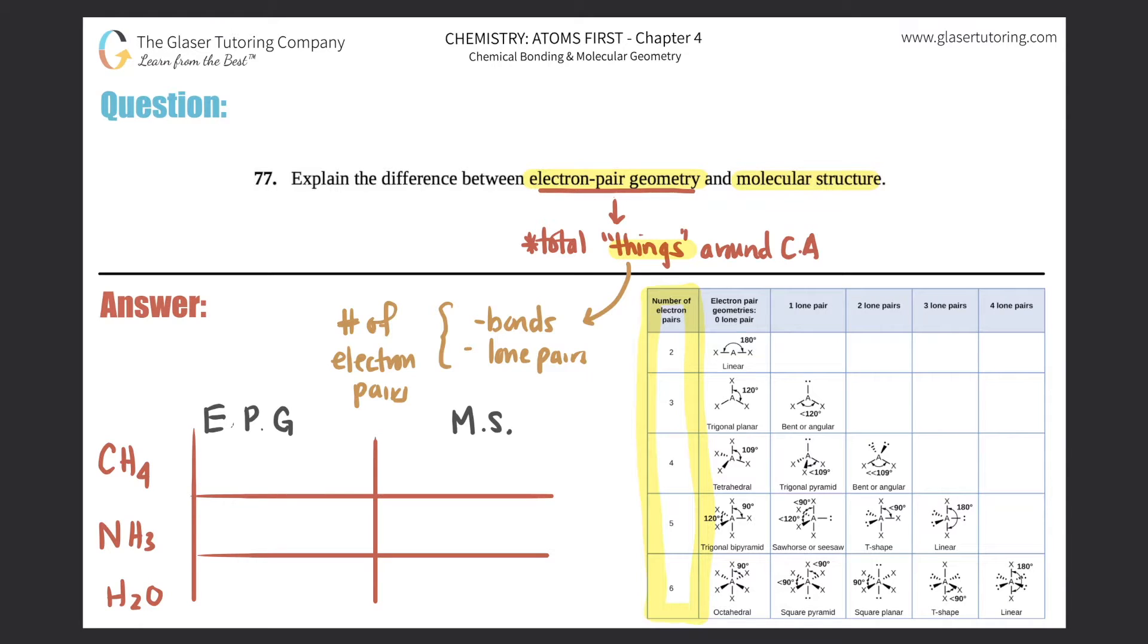CH4, which I will draw up top here, should have a carbon in the middle. If we know how to draw the Lewis structures, it would have carbon in the middle surrounded by four hydrogens. When you're talking about electron pair geometry and molecular structure, you only look at the central atom. This atom has four things connected to it: one single bond here, one single bond here, another one, and another one.